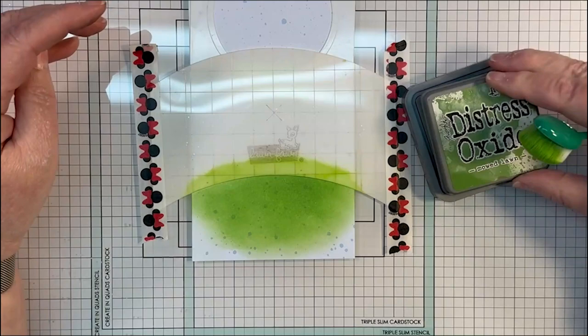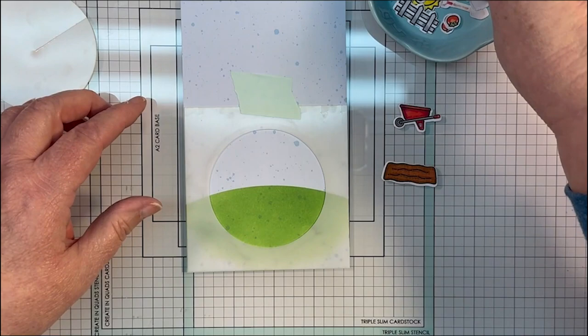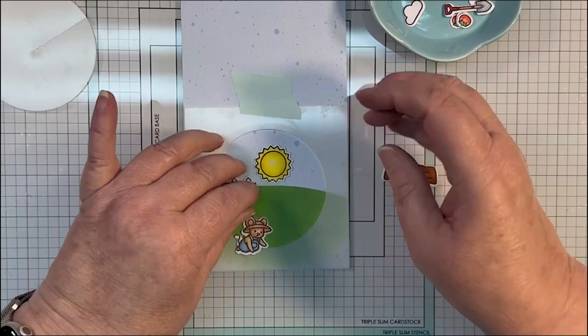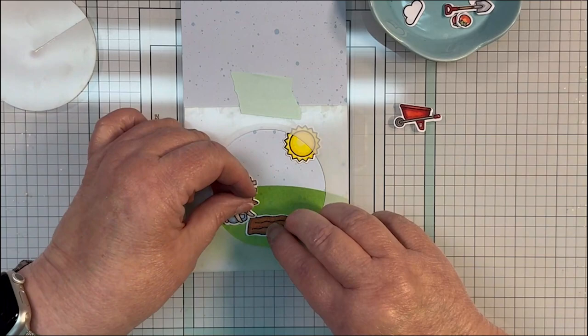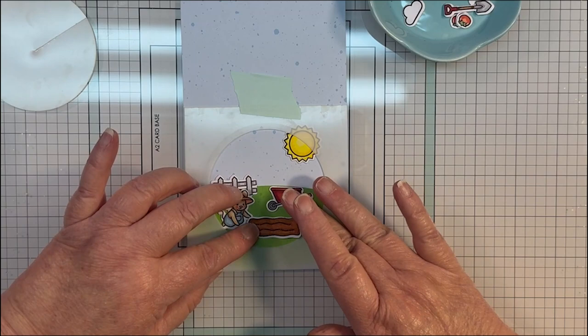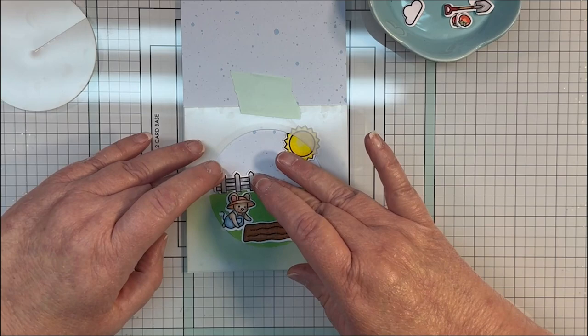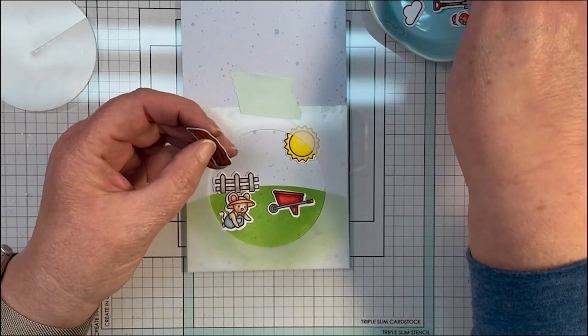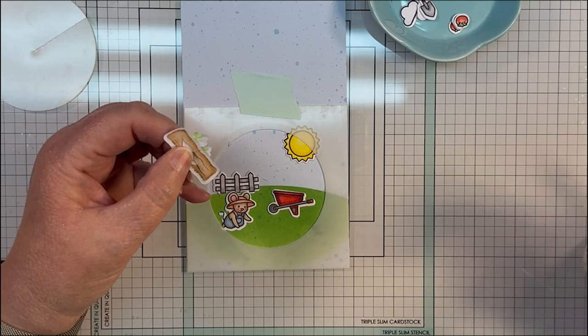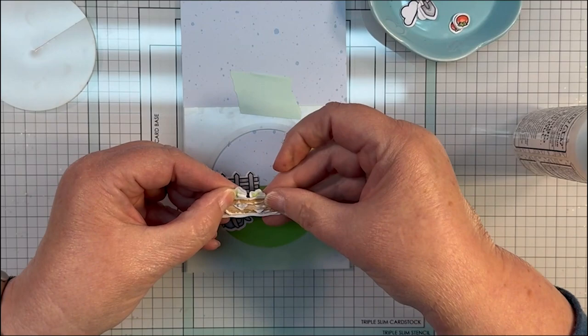I'm going to flip that template back down and start placing in my little pieces from the Veggie Happy stamp set. I've already colored them and cut them out. I've used Copic markers, and the colors that I've used are YR01, YR02, B91, B95, E30, E31, E33, E34, E35, E37, R20, R22, N1, N2, N3, Y06, and Y08.